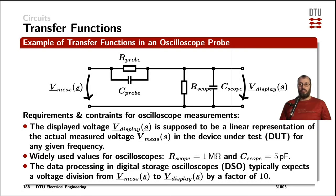Another example for transfer functions is coming from practical laboratory measurements. You have the voltage on a device under test that you want to measure and you apply an oscilloscope probe to measure that voltage. Now the oscilloscope probe is modeled as a resistor in parallel with the capacitor.